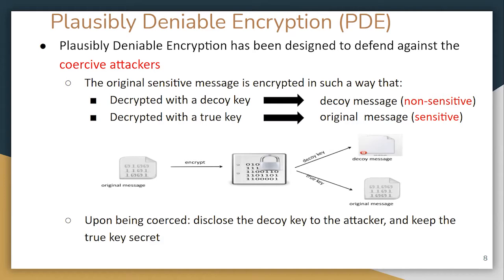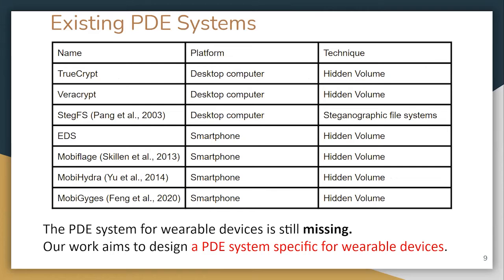PDE works as follows: the plaintext is encrypted with two keys — a decoy key and a true key. When the cipher is decrypted with the decoy key, we get the decoy message; with the true key, we get the true message. The user can disclose the decoy key upon being coerced and keep the true key hidden, thereby protecting sensitive data. Currently, for desktop computers and smartphones there are many PDE works using hidden volumes or steganographic file systems.